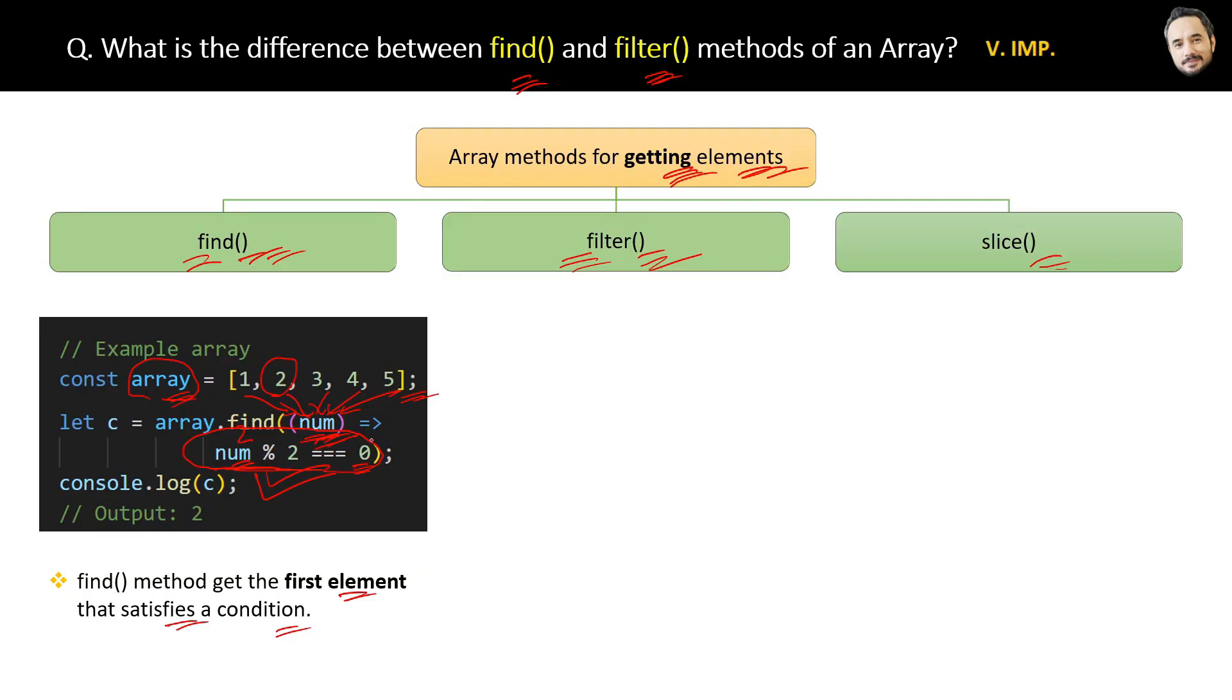Therefore 2 will be the result element of the find function which will be stored in the variable c. Now this condition is also true for the next 4 element, but remember with the find function you only get the first element that satisfies the condition. Great.